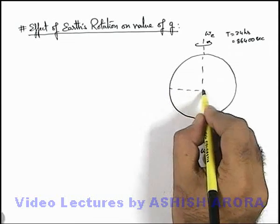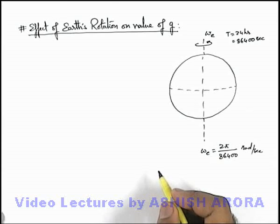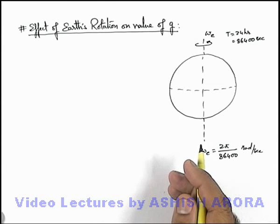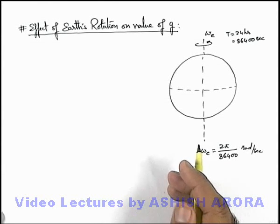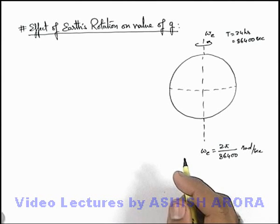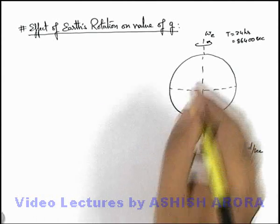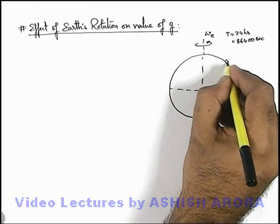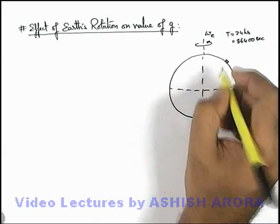Now if this is the equator of Earth, at various points we wish to find out the value of gravity and the effect on the value of gravity due to rotation of Earth. Let us consider a point where a body is placed on Earth's surface.